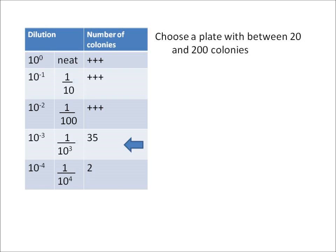So you need to choose a plate with between 20 and 200 colonies. If you try to count more than about 200 colonies, then you don't tend to be very accurate. So you can see that I have managed to count 35 colonies on my 10 to the minus 3 plate.